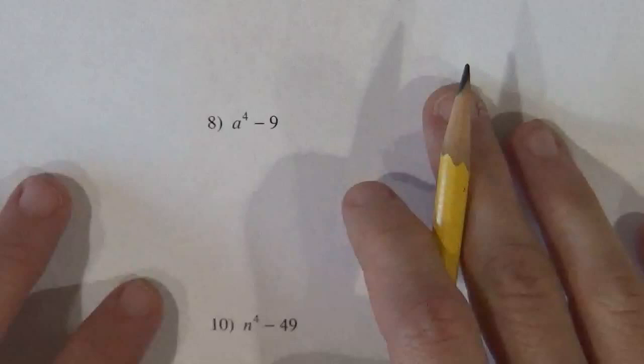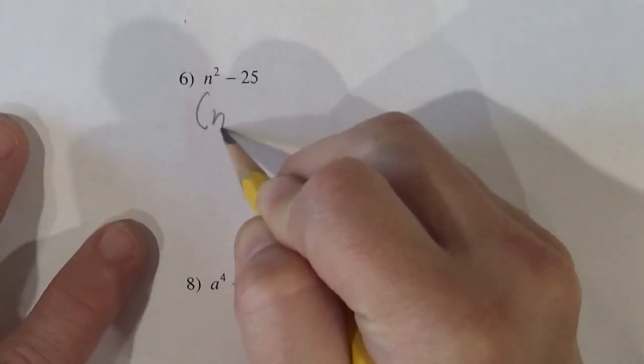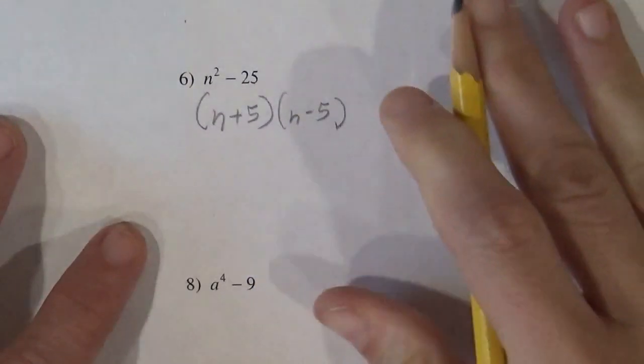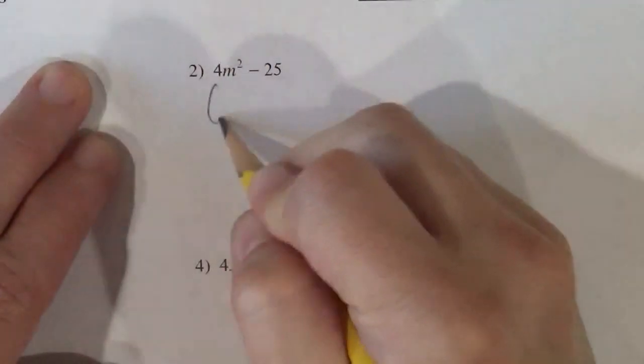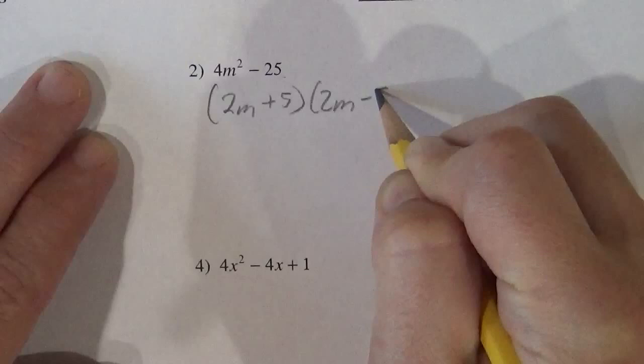Let's go to this one here. Those are both perfect squares. That's n plus 5 and n minus 5. Let's do this one here. Those are both perfect squares. That's 2m plus 5 and 2m minus 5.